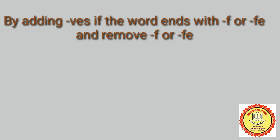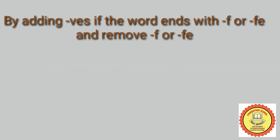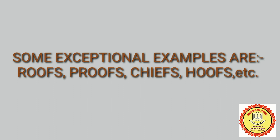The next rule is: if the word ends with F or FE, remove F or FE and add VES. For example, the plural of leaf is leaves, the plural of life is lives. However, there are some exceptions: the plural of roof is roofs, proof is proofs, chief is chiefs, and many more.